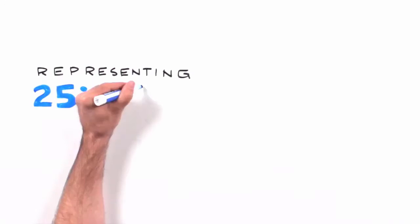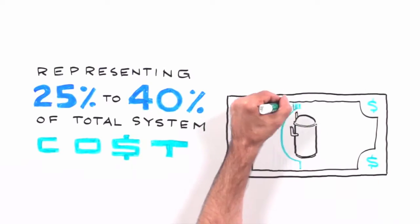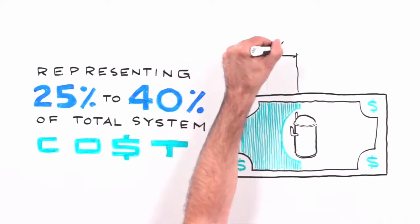Representing 25% to 40% of total system cost, compressors and their drivelines set the price and performance position of the system as a whole.